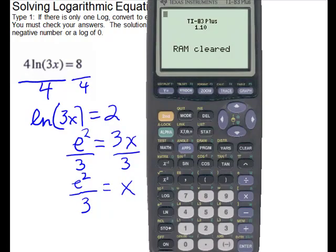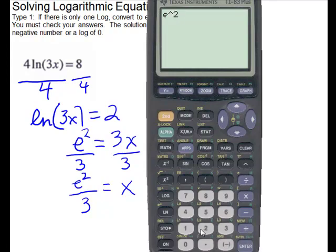For this problem they would like an exact answer, which is e squared over 3, and a decimal approximation. We have an e button on the calculator — press 2nd, it's above the divide key — raise it to the 2nd power, divided by 3, and press enter, giving us 2.463. Going to 3 decimal places, the next digit would not push it up, so our approximation is 2.463.